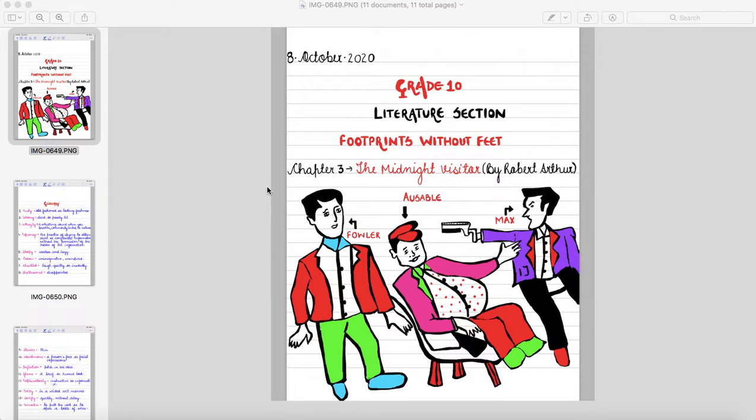As you can see, there are three characters here. First, Fowler, who is a young writer. Second, Ausable, who is a secret agent. And third, Max, who is also a secret agent but belongs to a rival institution. Okay, rest of the part we will discuss while reading the summary of the story.